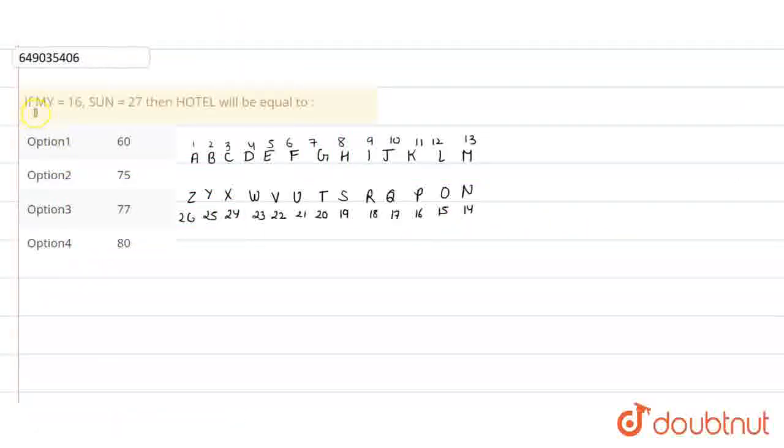Hello students, the question is: if MY is equal to 16, SERN is equal to 27, then HOTEL will be equal to?